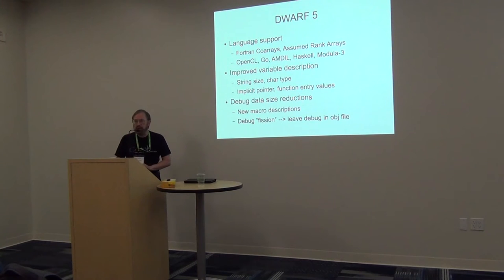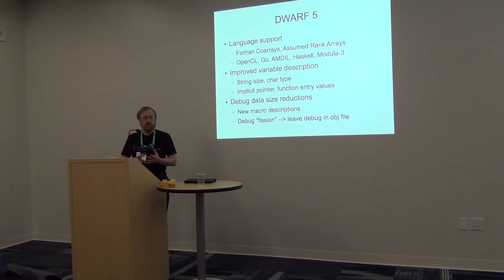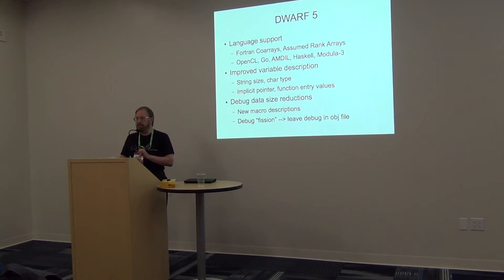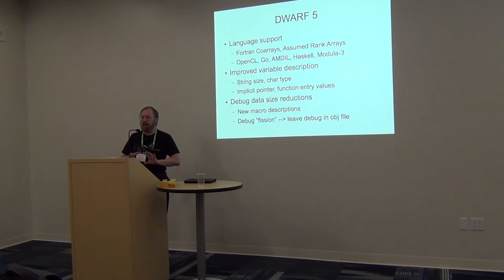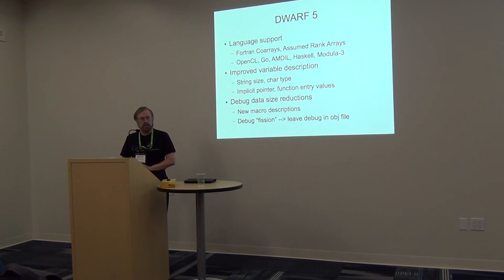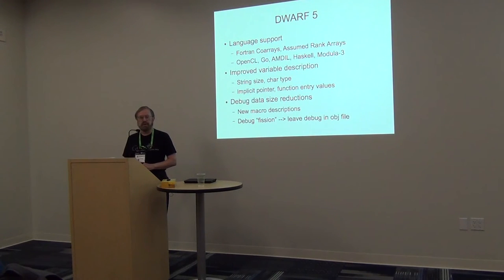These are pretty trivial things. We've included some better ways to describe where variables are located, such as implicit pointers — which are data actually in your program and available, except the pointer which addresses it no longer is available. And we've now got a way to do that. We're going to have some ways of identifying where function entry values should be captured so that we can have that data available.